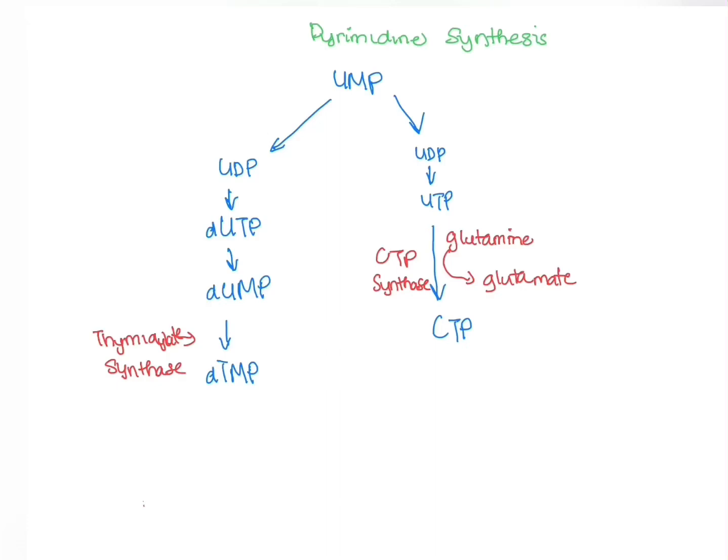For CTP formation, it requires glutamine and CTP synthase. When forming DTMP, you need thymidylate synthase.